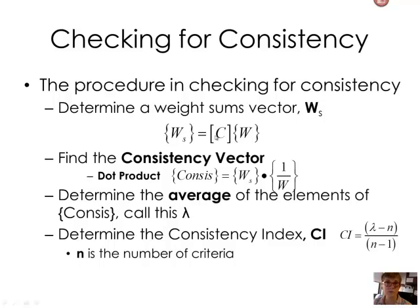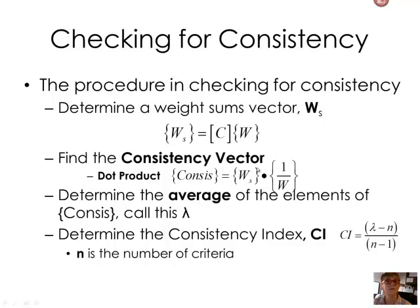I'm going to go back to my original C matrix — not the normalized one, but the one containing the original pairwise comparisons — and multiply that by the W vector we just calculated, which was the average of the rows of the normalized matrix. That gives me a new vector, the W-sub-s vector. Once I have W-sub-s, I'm going to take the dot product of W-sub-s with 1-over-W. You can't divide a vector by a vector, so we use the dot product instead. That gives us the consistency vector. We'll average that vector to get a lambda value, and use that to calculate the consistency index: lambda minus n, over n minus 1, where n is the number of criteria. In the next brief video, we'll go through this calculation for the consistency ratio to see if our rankings were consistent.